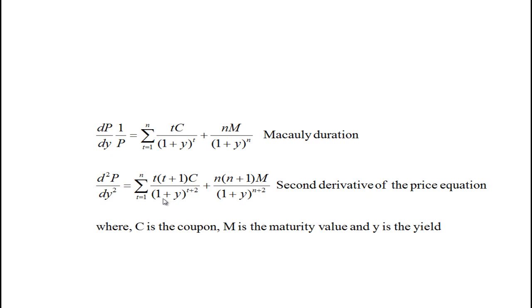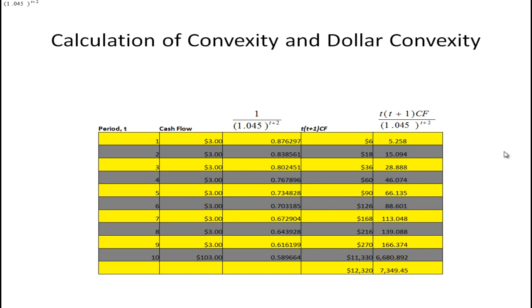Now that you have these summation formulas, you can actually calculate something, and it's quite easily done in Excel. Here we have a bond that matures in five years and pays semi-annual coupon payments. It's a six percent coupon bond, so you get three dollars each period. We calculate using the formula: one over (one plus the interest rate) raised to the t+2 power, and t times (t+1) times the cash flow.